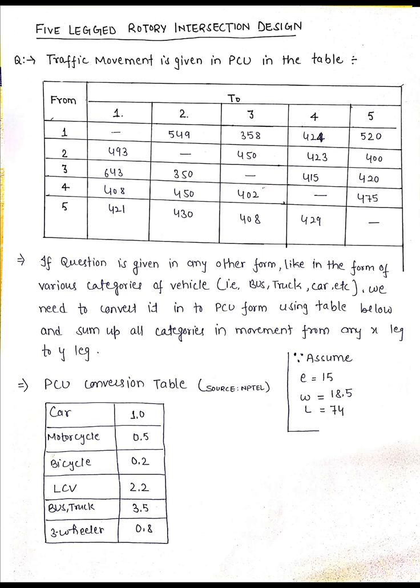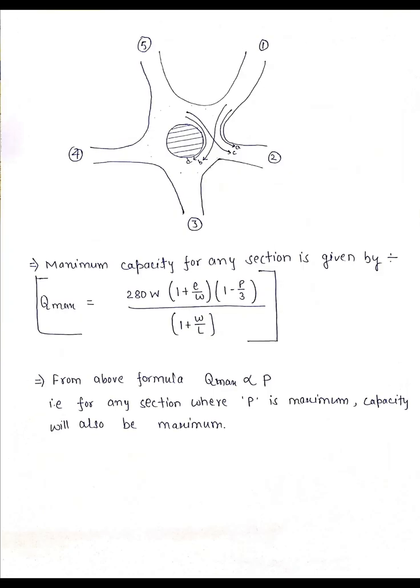We multiply that traffic with the PCU conversion factors and will get the values as given in this table. Other than this, values of E, W, and L are also given in the question. If not given, there are various sources for this, so we can assume these values as per those sources.